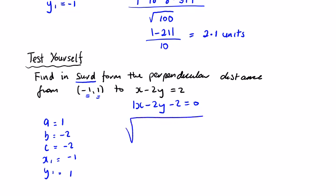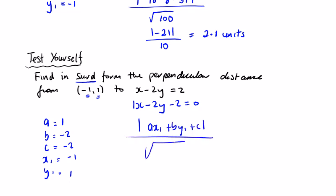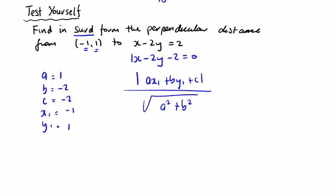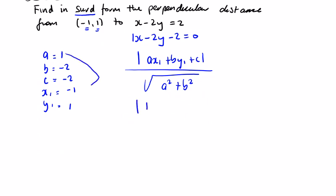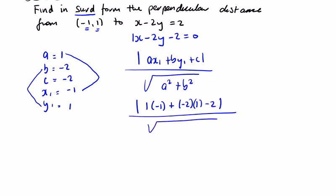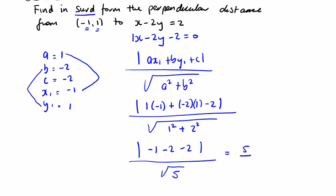Always write your formula down: the absolute value of ax₁ plus by₁ plus c, over the square root of a squared plus b squared. Filling in: absolute value of 1 times −1, plus −2 times 1, minus 2, all over the square root of 1 squared plus 2 squared. That gives us the absolute value of −1 minus 2 minus 2, over the square root of 5, which equals 5 over root 5.